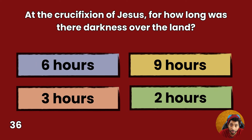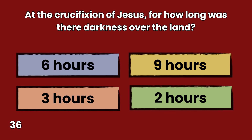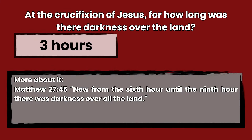Question 36: At the crucifixion of Jesus, for how long was there darkness over the land? Six hours, nine hours, three hours, or two hours? Answer: Three hours. Matthew 27:45 — Now, from the sixth hour until the ninth hour, there was darkness over all the land.